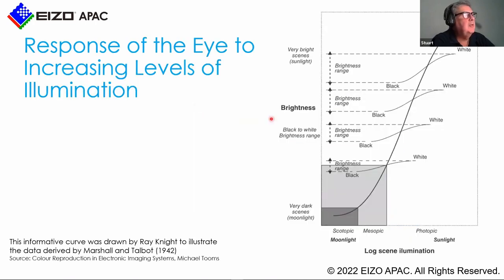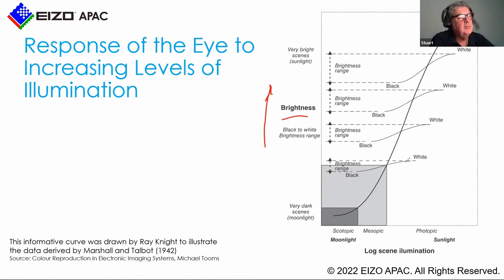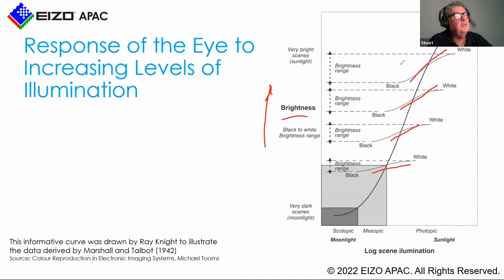This is an interesting chart from Ray Knight, Marshall and Talbot in the 1940s — also involving David McAdam of McAdam ellipses. The brightness scale shows these lines get steeper and bigger as brightness increases, meaning our ability to see differences in grayscale levels increases as brightness increases. When talking about HDR, going from 100 nits in SDR to 1000 nits, our ability to see differences keeps increasing. Therefore the opportunity to see banding in poor images also increases in ways you wouldn't normally see in SDR. Your human visual system will start to change as you work with HDR images.